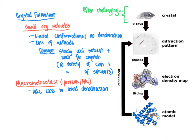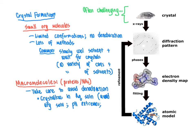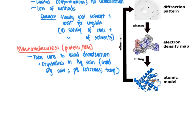When crystallizing macromolecules, we must take care to avoid denaturation. Things that denature proteins include placing them into organic solvents — for example, ethanol is an effective disinfectant because it denatures proteins. So we have to crystallize specifically from aqueous solutions. We must avoid highly concentrated organic solvents, pH extremes, and changes in temperature, since high temperatures can disrupt the tertiary and secondary structures of proteins leading to denaturation.